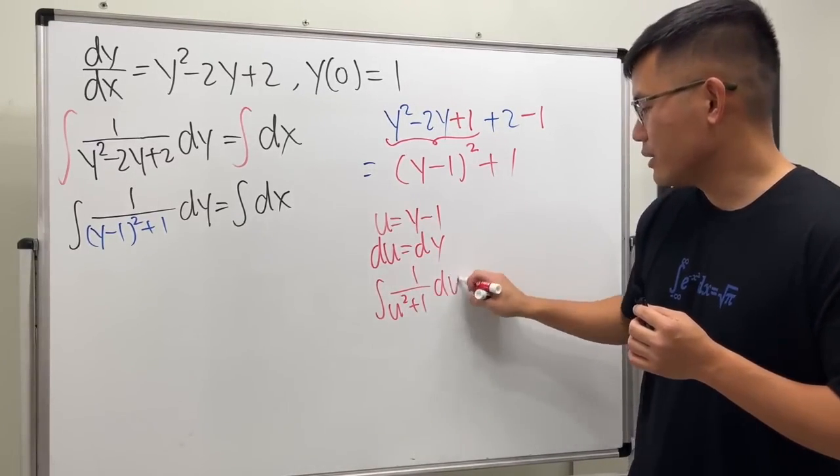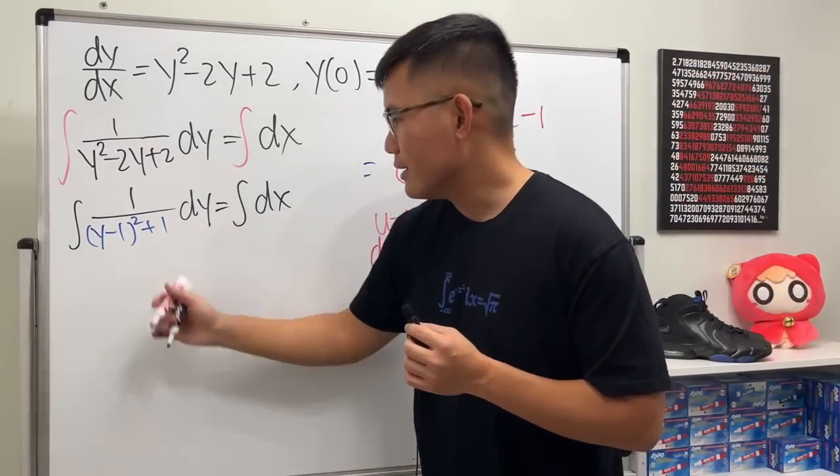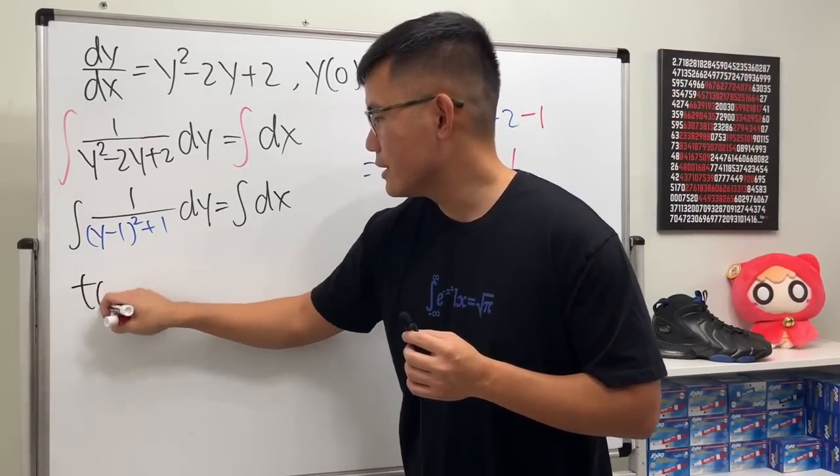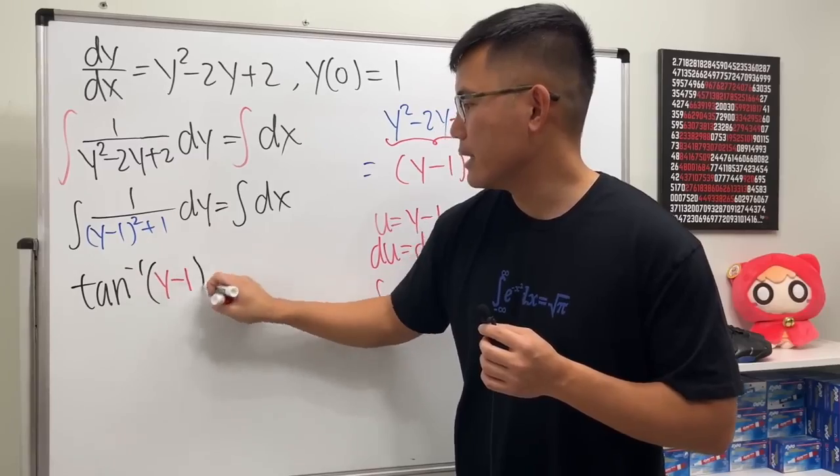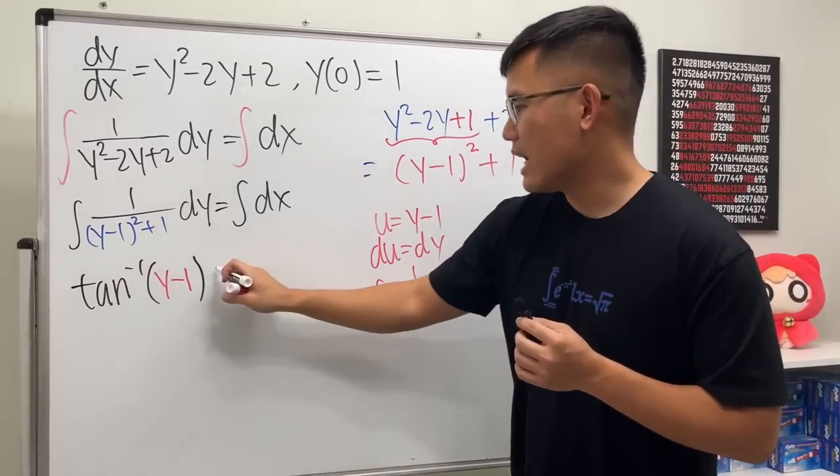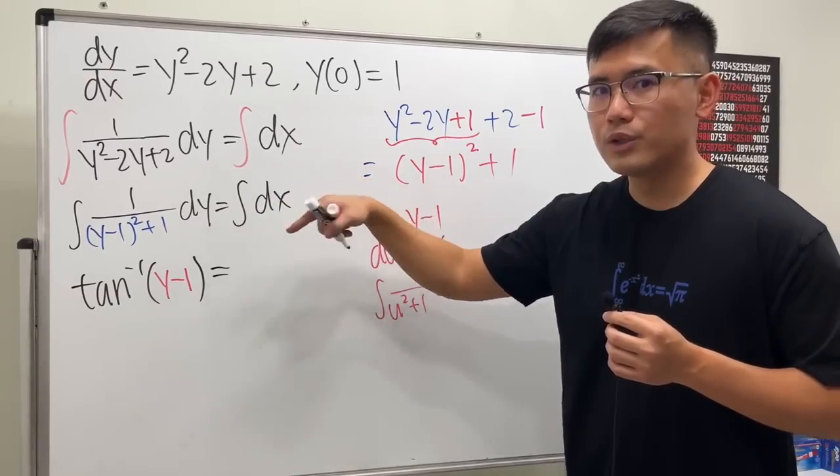And that will give us inverse tangent, yay! So here we have tan⁻¹(u), which is tan⁻¹(y - 1). On the right-hand side, we have the integral of 1 in the x world, so we get x.